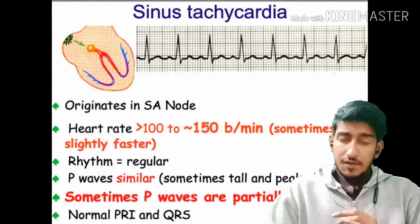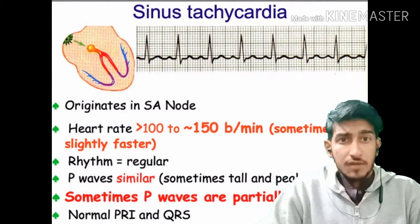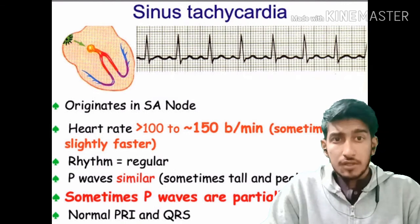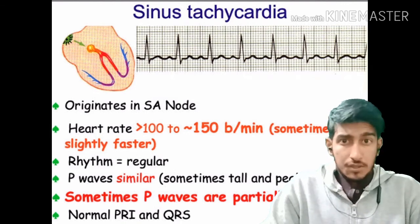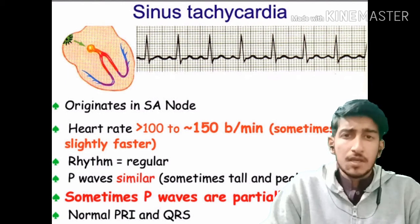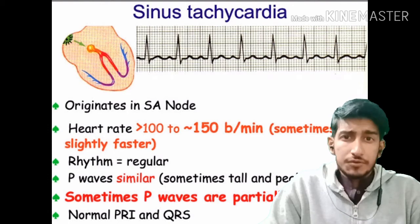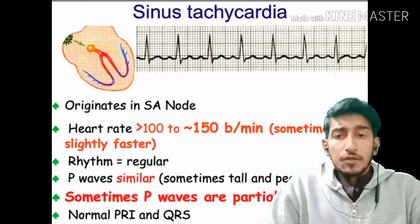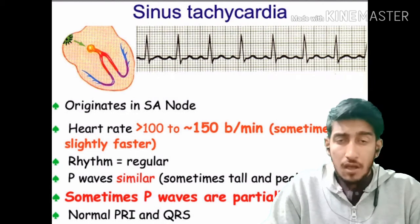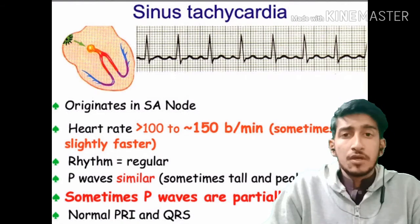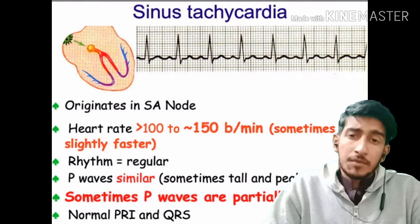The first side effect is sinus tachycardia — an abnormal increase in heart rate. You can see the ECG — the P-wave is a bit hidden, which is a very important symptom of this kind of tachycardia. You will see a very high heart rate, even reaching from 100 to 150 beats per minute, whereas normal is around 70 beats per minute.